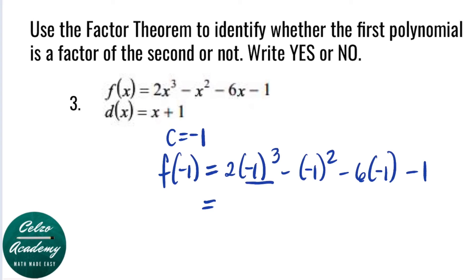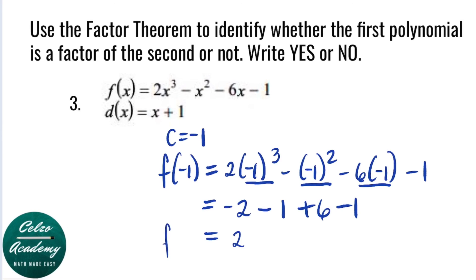Simplifying this: negative 1 to the third is negative 1, times 2, we have negative 2. Then negative 1 squared is positive 1, so we have minus that positive 1. Next, negative 6 times negative 1 is plus 6, and we have minus 1. Simplifying from left to right: negative 2 minus 1 is negative 3; negative 3 plus 6 is 3; 3 minus 1 is 2. So our f of negative 1 is 2. And since the remainder is not 0, this means that x plus 1 is not a factor of f of x.